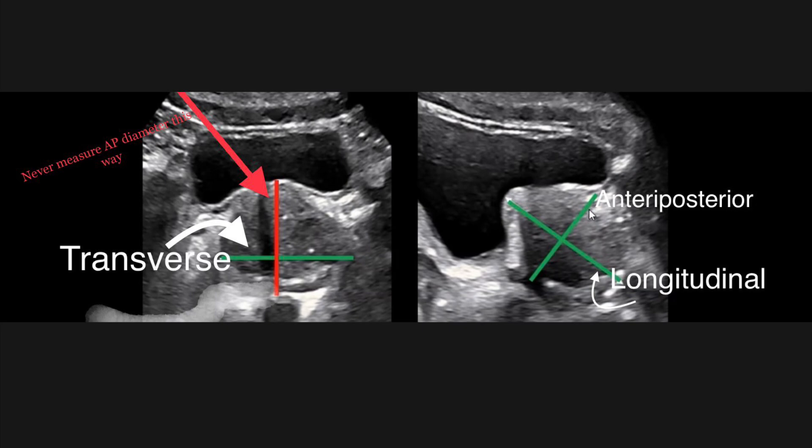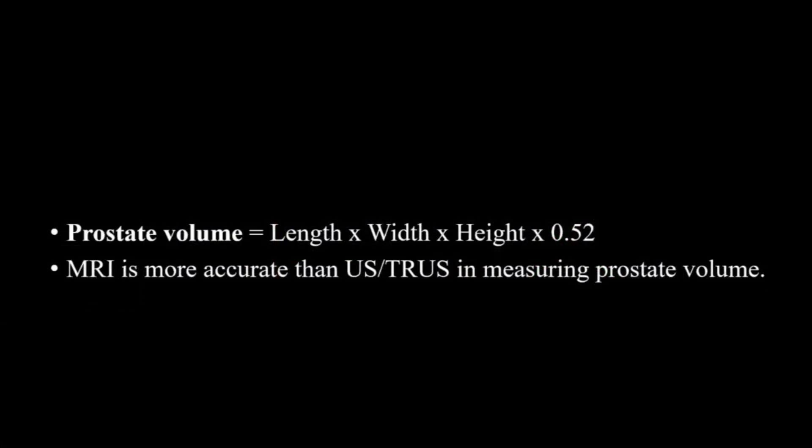This is the correct method to measure prostate dimensions. These three dimensions — width, height, and length — are multiplied by 0.52 to get the prostatic volume. Ensure the measurements are in centimeters to get the volume in cubic centimeters.